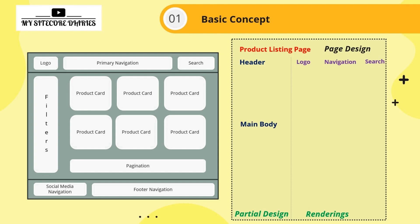Similarly, the main body is a partial design containing filters, product card list, and pagination. The footer is another partial design containing social media and footer navigation components. In SXA, you define a page design — like a 'product listing page' — with placeholders for header, main body, and footer. Those are the partial designs, and you add renderings into them.